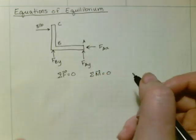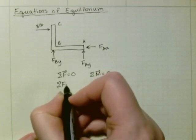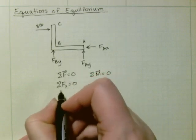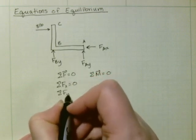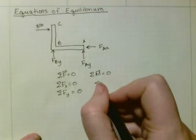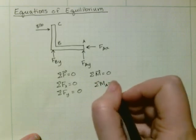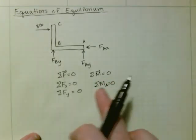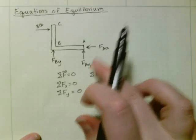So that gives us that the sum of the forces in the x direction are equal to 0, and the sum of the forces in the y direction are equal to 0. And then we could also sum the moments about point A equals 0, which gives us 3 equations and 3 unknowns.